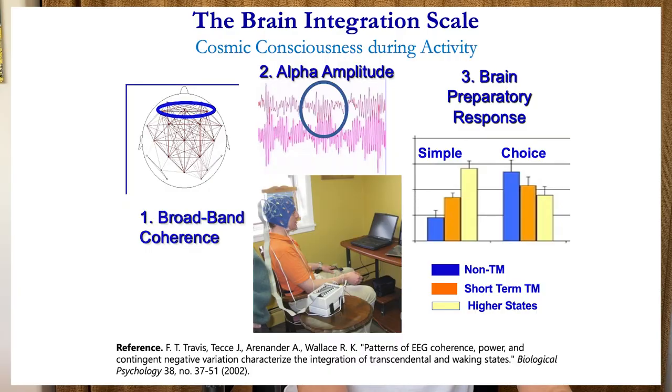Maharishi says the fourth state of consciousness coexists with the waking state, and we can see this on EEG brainwaves. Alpha-one brainwaves — the signature brainwave of TM — become present in scans when you regularly practice transcendental consciousness. In cosmic consciousness they're present during waking, dreaming, and sleeping. Alpha-one brainwaves are the signature of the feeling of inner wakefulness, and subjectively it's reported as witnessing sleep: you still get deep sleep and rest, but there's this inner wakefulness while you're sleeping.